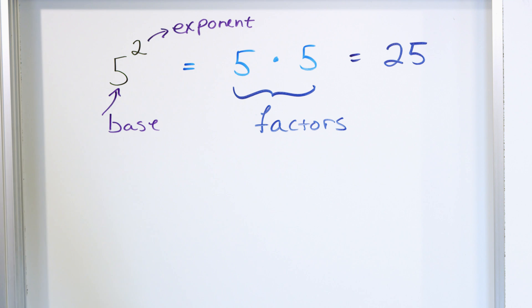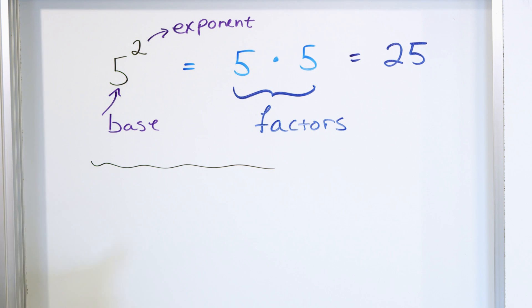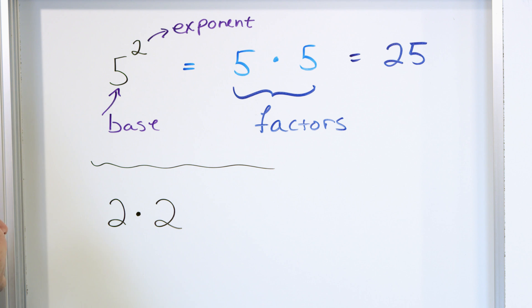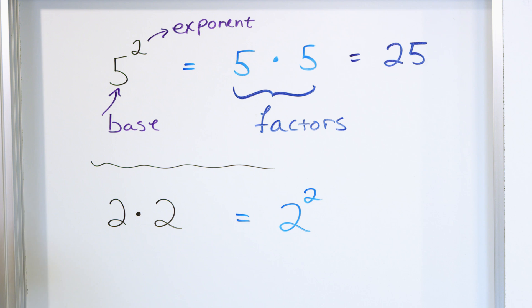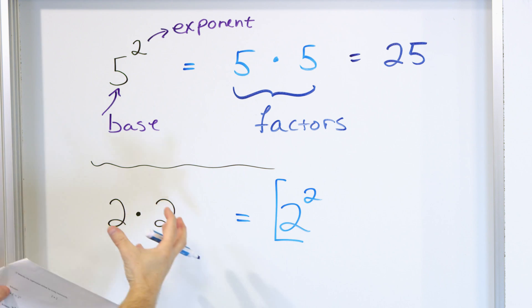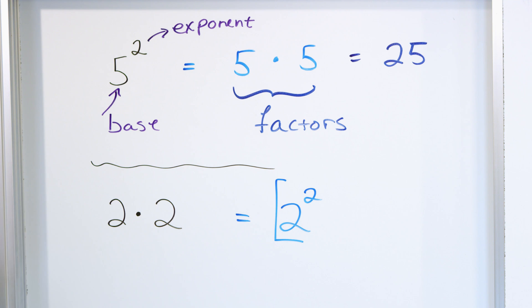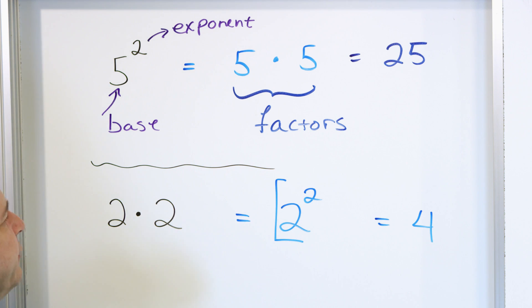So let's take a look at problem number two. Above, we took an exponent and wrote it as a product of factors. Now I'm going to give you a product of factors and ask you to write it as a base raised to an exponent. The two is what is being multiplied, so the base is two. And there are only two of them, so it has to be two squared. Two times two is four, so two squared equals four — these are all different ways of writing the same thing.